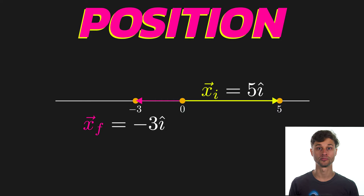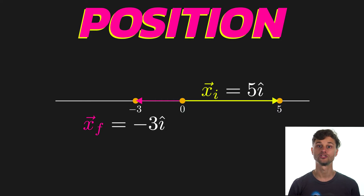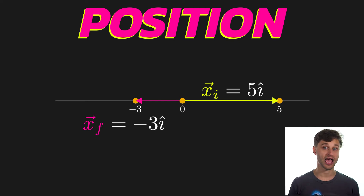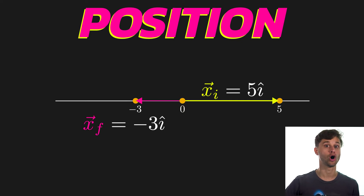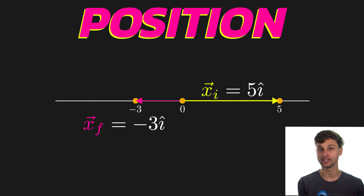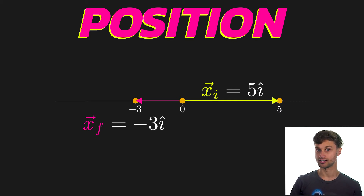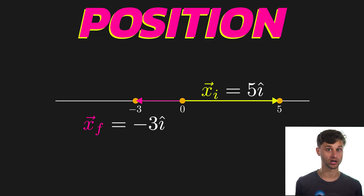If I were at the placement of negative three, that would be a position of -3 î. You'll see that position must be measured from some arbitrary zero point, which we call the origin. This is true in one dimension, two dimensions, or three dimensions. In this way, position is an absolute quantity — it's measured from a very specific point and from the same point for all bodies within the system.